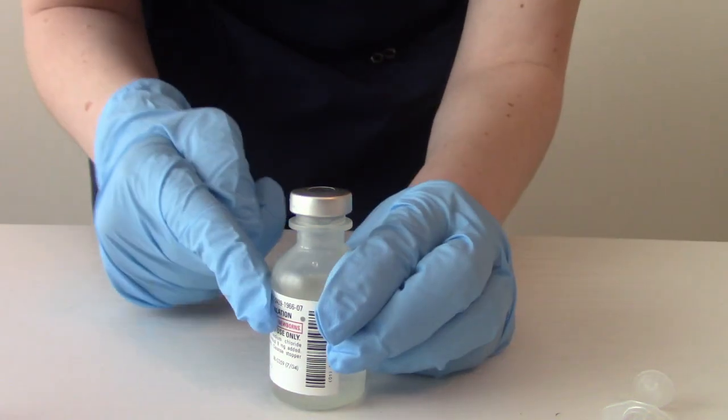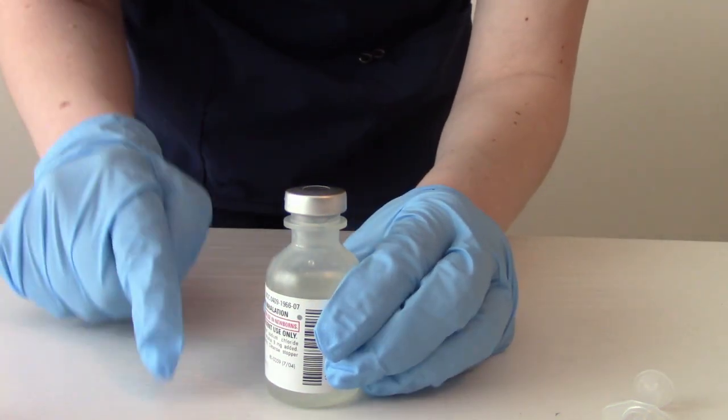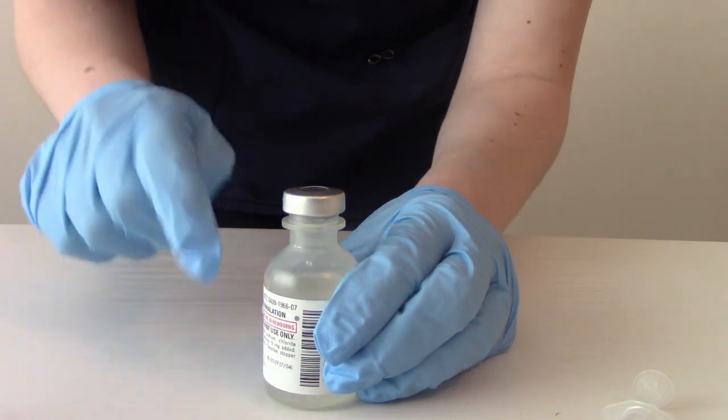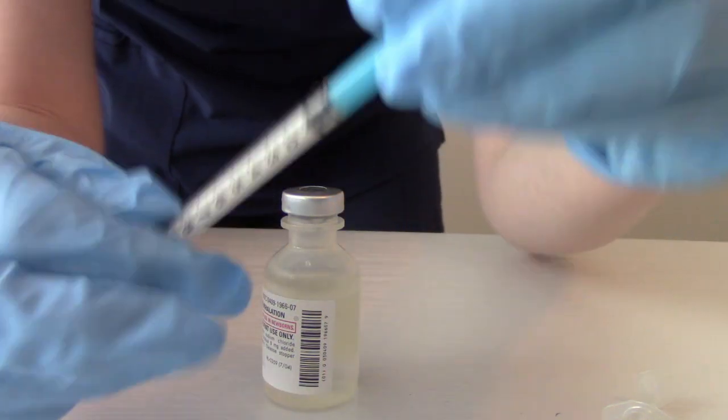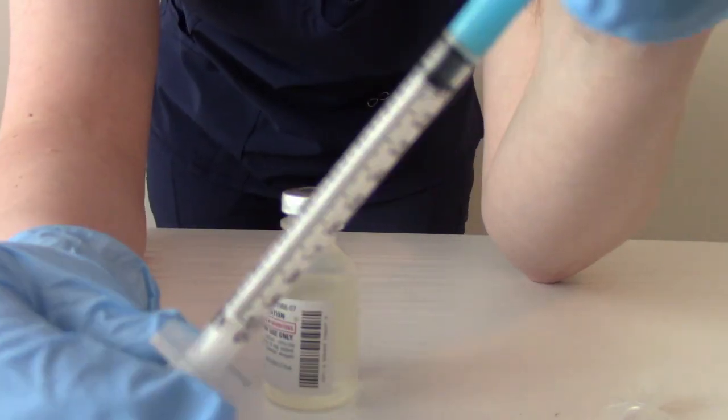Remember, when we're dealing with a vial, we have to check for expiration date, lot number, and manufacturer date. And the other little thing I wanted to point out first is this. This is a tuberculin syringe.